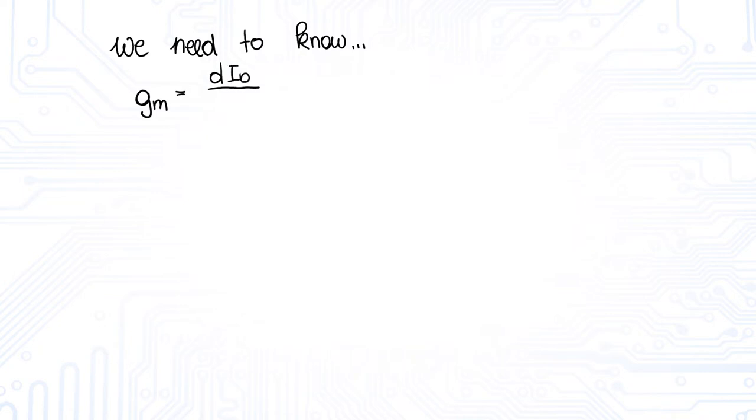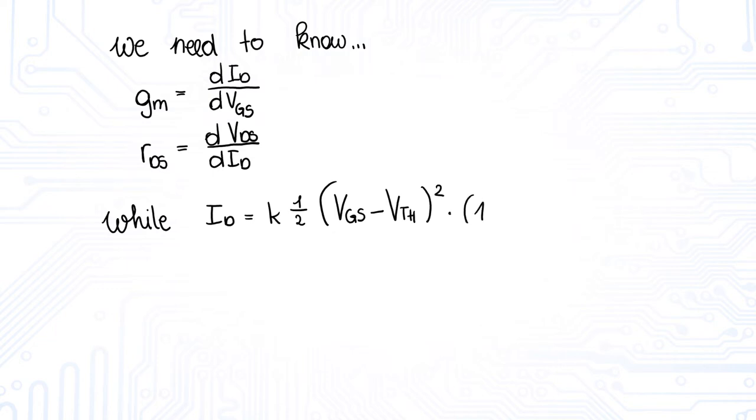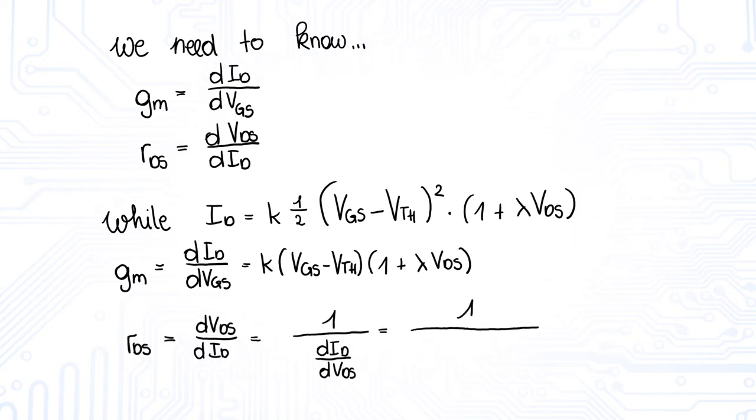GM can be calculated by the derivative from ID to VGS in the operating point. RDS can be calculated by building the derivative from VDS to ID in the operating point. As our transistor works in the saturation region, we use the formula of ID for the saturation region, which is ID is K times a half times VGS minus VTH squared times 1 plus lambda times VDS. So GM is K times VGS minus VTH times 1 plus lambda times VDS. And RDS is 1 over lambda times 1 half times K times VGS minus VTH squared, whereas 1 half times K times VGS minus VTH squared is approximately ID. So we can write RDS is 1 over lambda times ID.